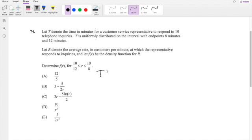They denote T to be the time in minutes it takes to respond to 10 customers. They tell you R is the average rate in customers per minute at which the representative responds to inquiries, and let F of R be the density function of R.